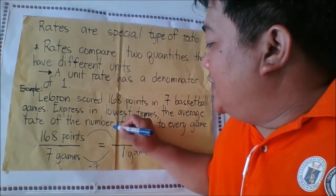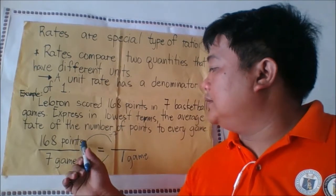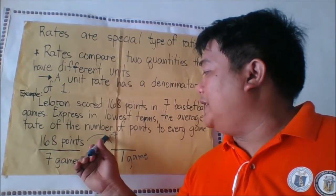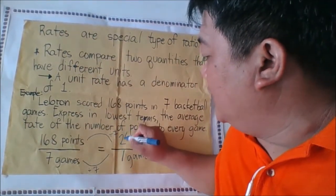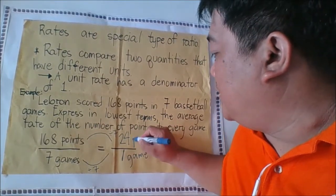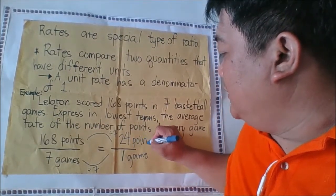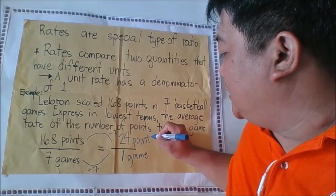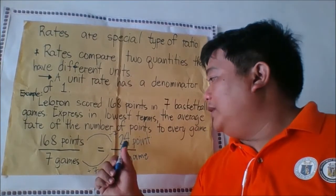168 divided by 7 is 24, so 24 points. The unit rate of this is Lebron scores 24 points in every game. Let us try more examples on finding the unit rates.